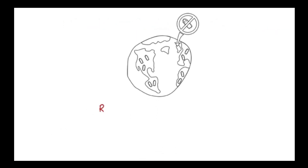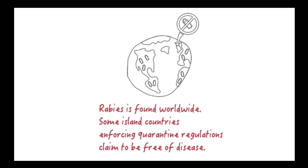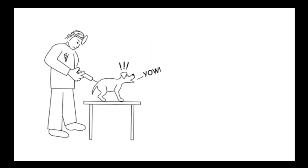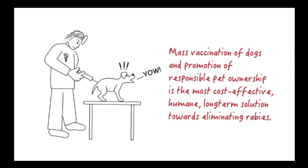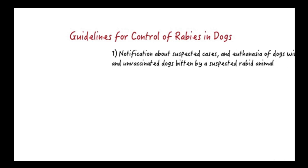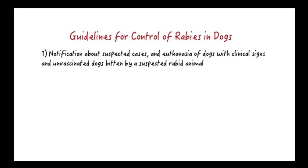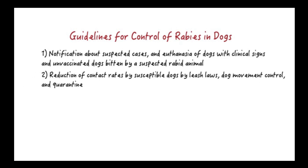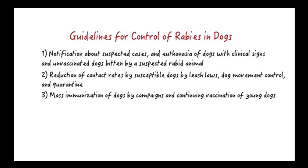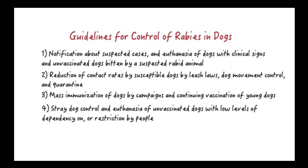Rabies is found throughout the world, but a few island countries like the United Kingdom have enforced rigorous quarantine regulations for mammals and claim to be free of the disease. Mass vaccination of dogs and promotion of responsible pet ownership has the greatest potential for cost-effective long-term eradication of rabies. Comprehensive guidelines prepared by the World Health Organization and the National Association of State Public Health Veterinarians include: notification of suspected cases and euthanasia of dogs with clinical signs or bitten by a suspected rabid animal; reduction of contact rates between susceptible dogs by leash laws, dog movement control, and quarantine; mass immunization of dogs by campaigns and continuing vaccination of young dogs; stray dog control, euthanasia of unvaccinated dogs with low dependency on people, and dog registration.